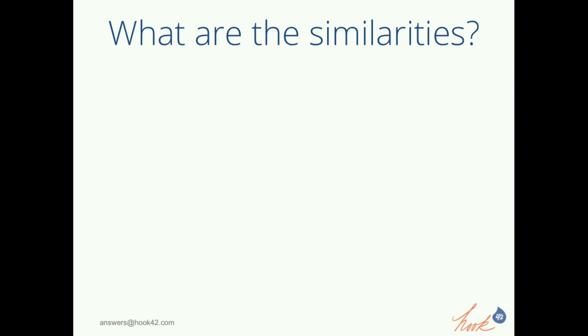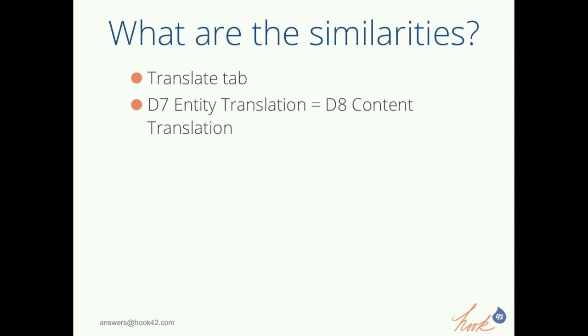There are some similarities between the two systems. There's a translate tab — if you set things up so you can translate, there's a tab on a particular piece of content where you go to do translations. That concept is the same between the two. In Drupal 7 there were two ways to translate nodes: the core way — node translation or content translation — and then entity translation, a contrib module that was heavily used. Conceptually, the D8 method for translating content is very similar to the way D7 did it with entity translation, plus a few additional modules.